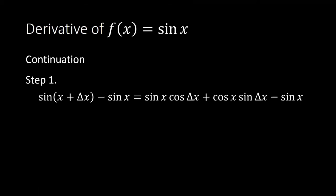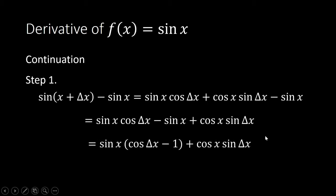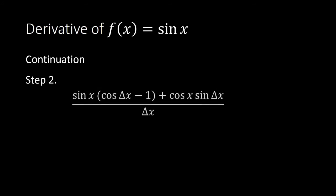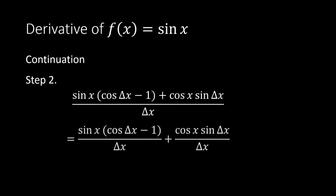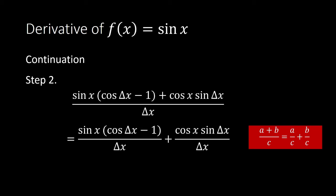In Step 1, we rearrange terms, bringing −sin(x) next to sin(x)cos(Δx), so that sin(x) becomes a common factor and we can factor it out. In Step 2, we divide the result of Step 1 by Δx and separate it into two fractions — using the rule that (a + b)/c equals a/c plus b/c.